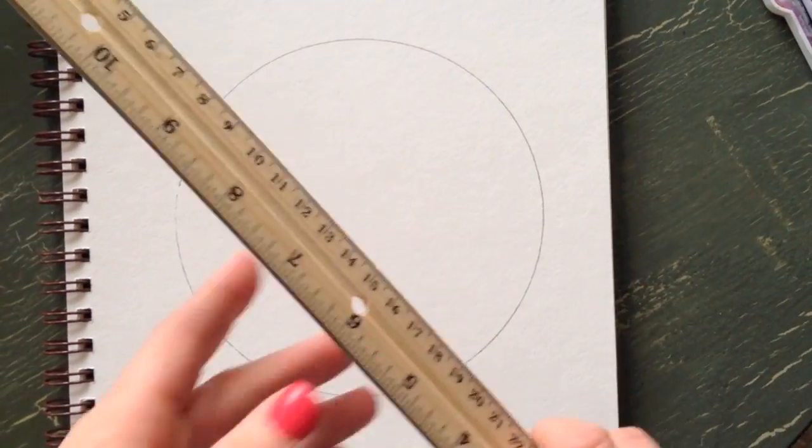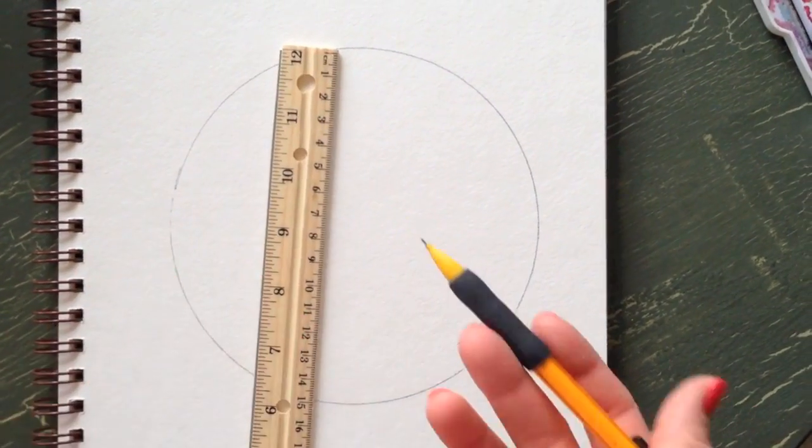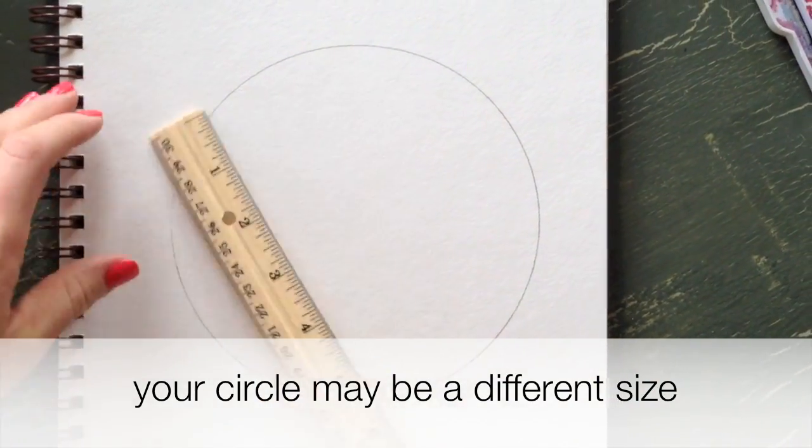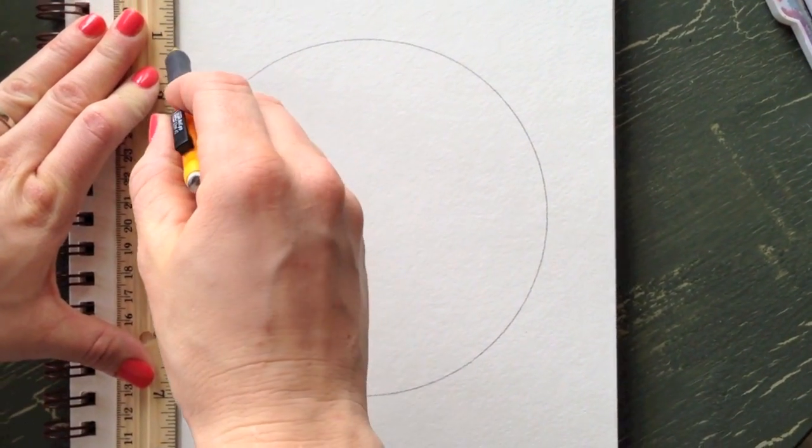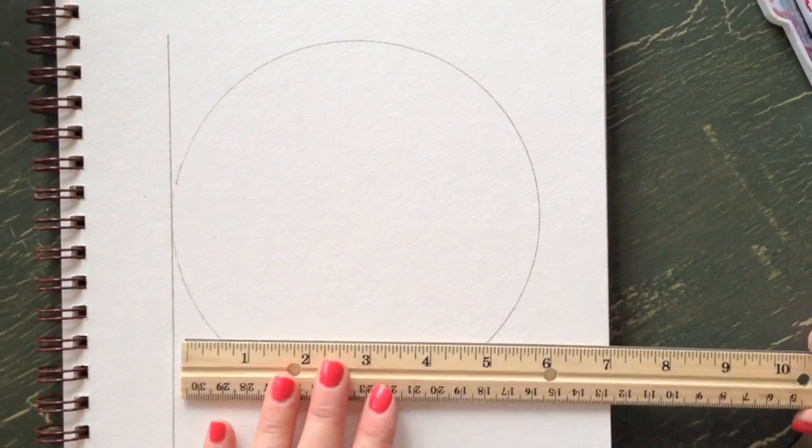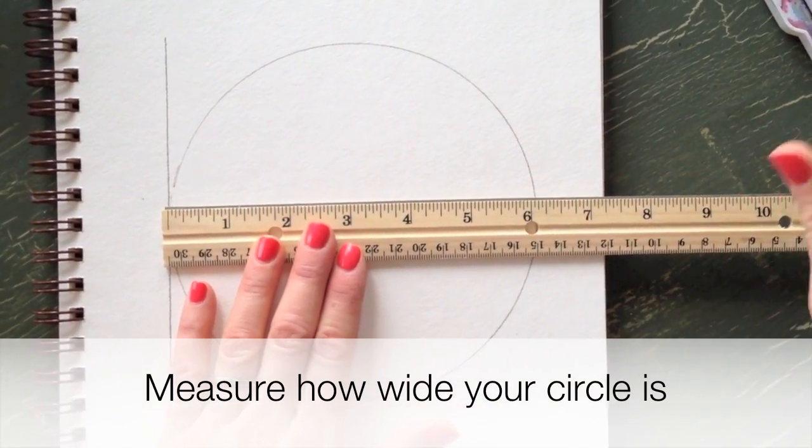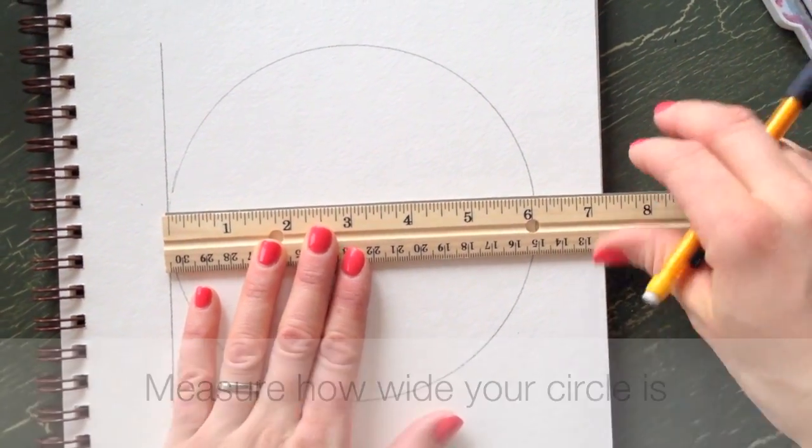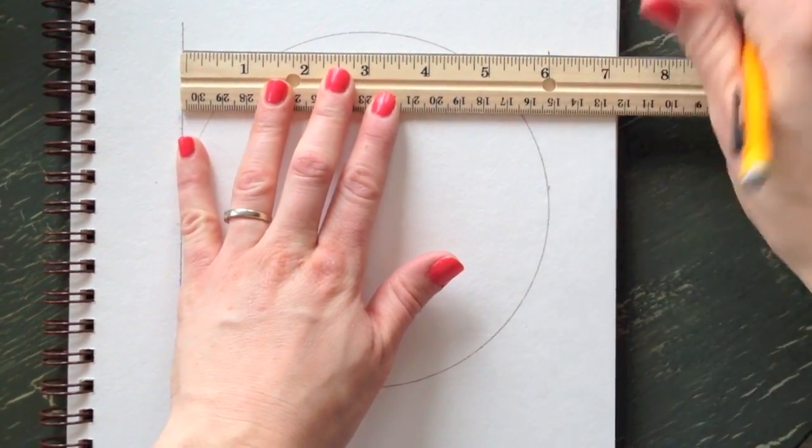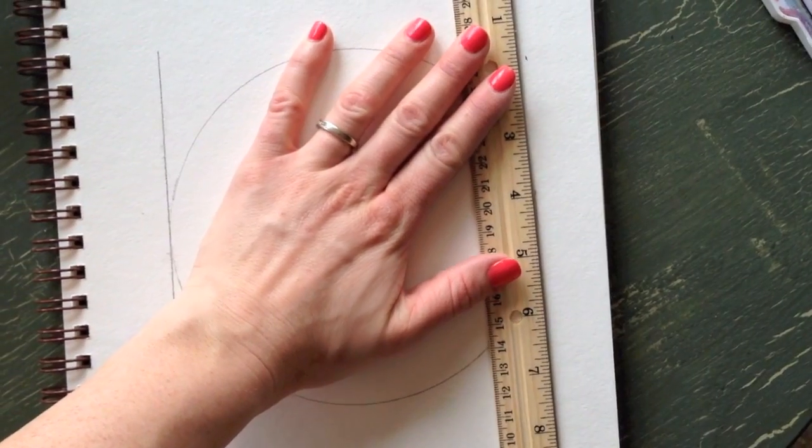And then you can use a ruler, and yours is gonna be completely different than mine. But what you want to do is make a straight line on one side so it touches it, and you're gonna measure how far that is to the other side. And then you're just gonna bring it over one more time, make another straight line on that side.